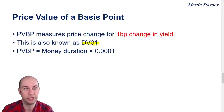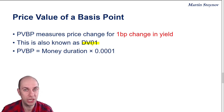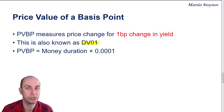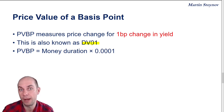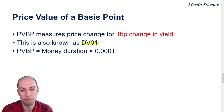However, money duration focuses on the price change for a 1% change in yield, whereas the price value of a basis point focuses on the price change for 1 basis point, or 1/100th of a percentage point.